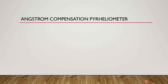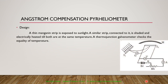What is the Ångström compensation pyrheliometer? In its design, a thin manganin strip is exposed to sunlight. Another similar strip connected to it is shaded and electrically heated until both are at the same temperature. A thermo-junction galvanometer checks the equality of temperature between the two manganin strips.